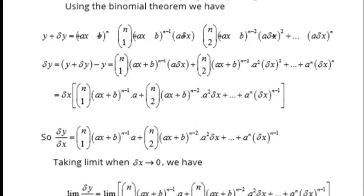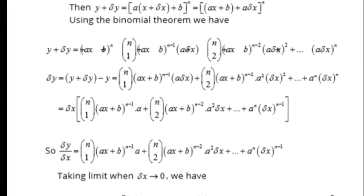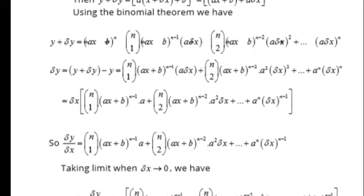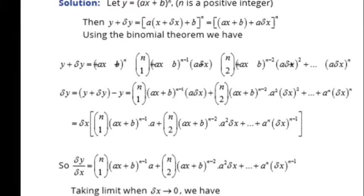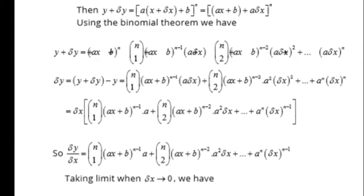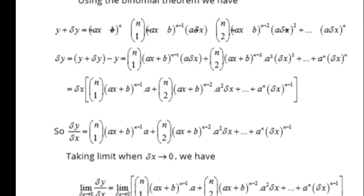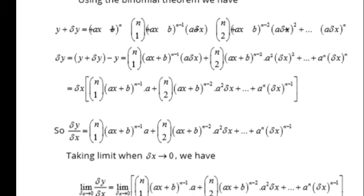Now we subtract first and second equations. From the right-hand side we have δy, and on the left-hand side we subtract the first term, then we take δx common, divide by δx.